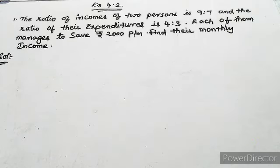Hello listener, in our previous class we discussed how to use elimination method. Today we are going to solve exercise problem. So what is your first problem of exercise 4.2? The ratio of incomes of two persons is